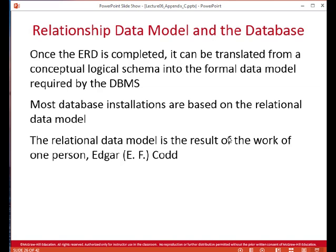For instance, a customer name might be a text field limited to 30 characters, the customer's date of birth would be a date field, the customer's address would again be a text field, and an employee's salary would be a numeric field. So we take the concepts — customer name, employee salary — and we map them into data types such as text and number.